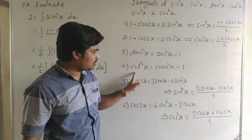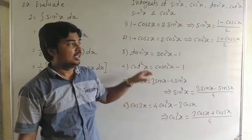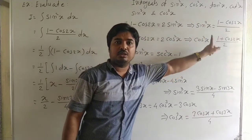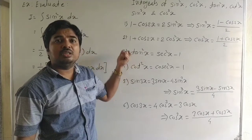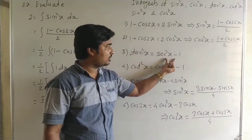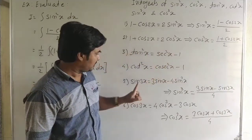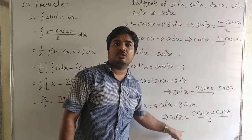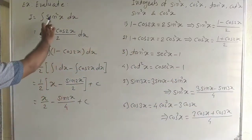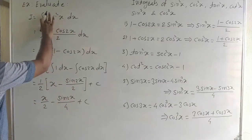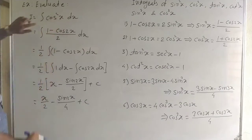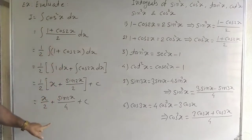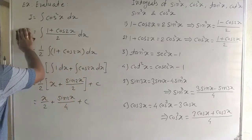So the strategy is: for the integral of sin²x or cos²x, first use the double-angle formula and then integrate. For the integral of tan²x or cot²x, first use the trigonometric identity (tan²x = sec²x − 1 or cot²x = cosec²x − 1) and then integrate. For sin³x or cos³x, first use the triple-angle formula and then integrate.